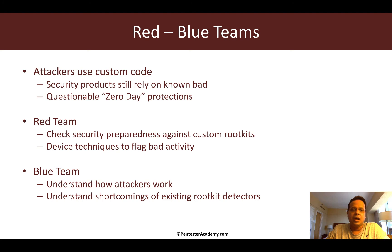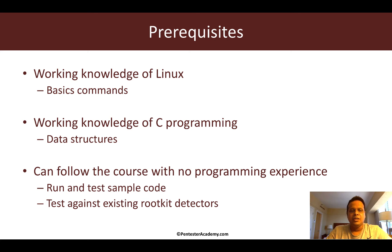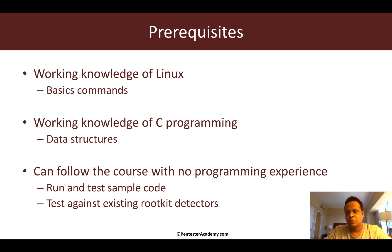What are the prerequisites? You need at least a working knowledge of Linux — being able to do basic commands like creating directories and opening files. Rootkits are highly technical, and most of it involves looking at code, so if you want to use these samples and modify them for your own network testing, you'll need at least some basic C programming — specifically an understanding of data structures like linked lists.